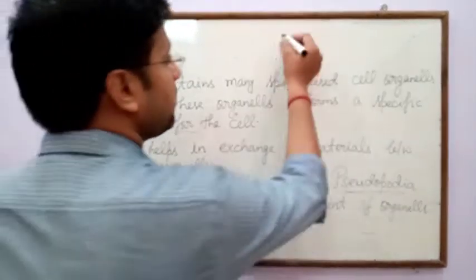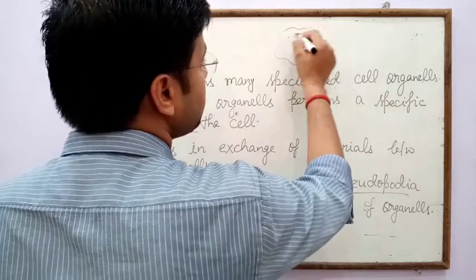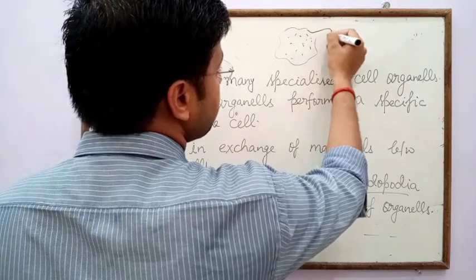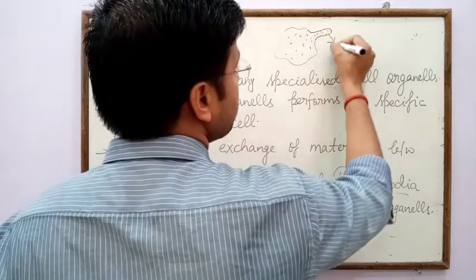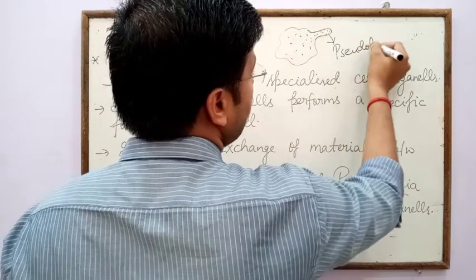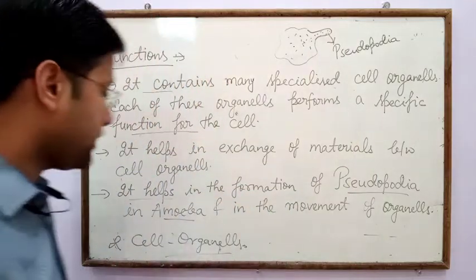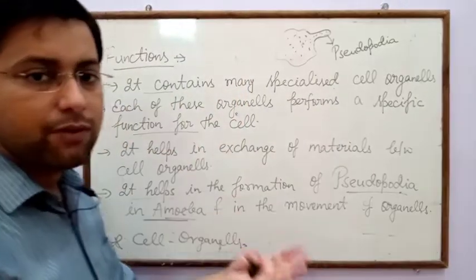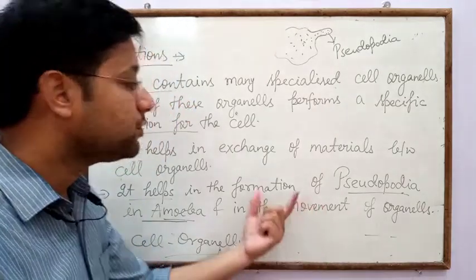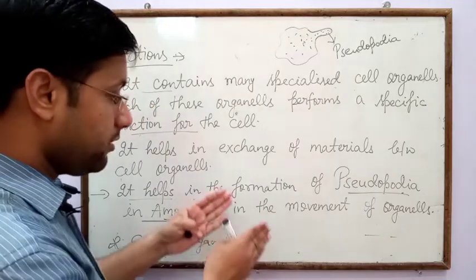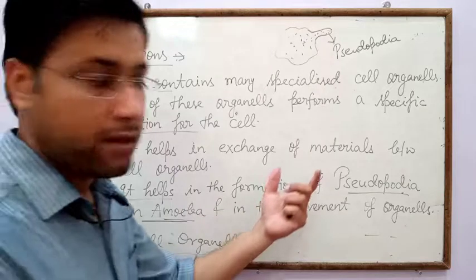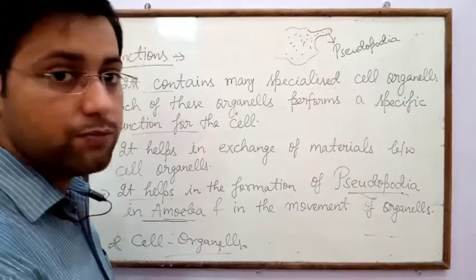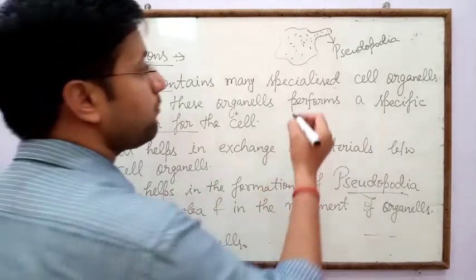Cytoplasm helps in the formation of pseudopodia in amoeba. In amoeba, there is no fixed shape — due to the pressure of cytoplasm, a finger-like extension or projection is formed called pseudopodia. Cytoplasm also helps in the movement of organelles because it is a jelly-like fluid through which all organelles can move. The formation of pseudopodia in amoeba is due to the pressure exerted by cytoplasm.